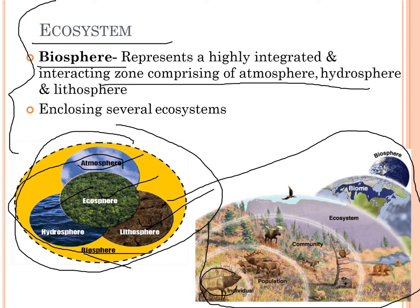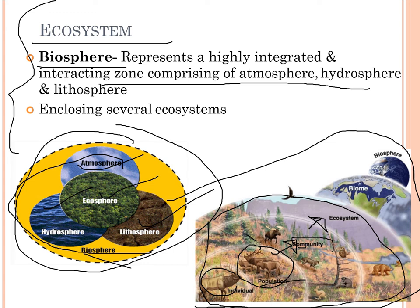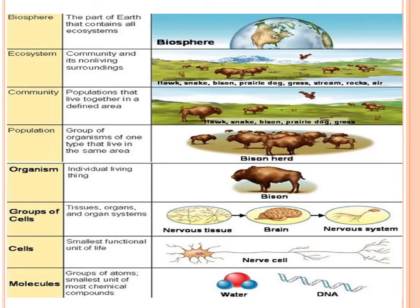Here is a level-up chart: individuals reproduce to form a population of the same species; populations combine into a community with individuals of different species; above community is the ecosystem; above ecosystem is the biome consisting of all flora and fauna; and above biome is the biosphere, which contains everything. A second diagram shows this hierarchy from biosphere down to molecules — including ecosystems, communities, populations, organisms, groups of cells, individual cells, and finally molecules such as water and DNA.